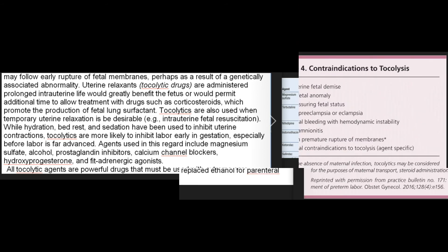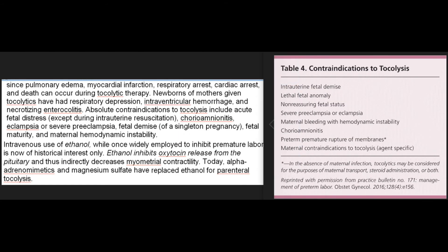Tocolytics are also used when temporary uterine relaxation is desirable, such as in intrauterine fetal resuscitation. While hydration, bed rest, and sedation have been used to inhibit uterine contractions, tocolytics are more likely to inhibit labor early in gestation, especially before labor is far advanced. Agents used in this regard include magnesium sulfate, alcohol, prostaglandin inhibitors, calcium channel blockers, hydroxyprogesterone, and beta-adrenergic agonists. All tocolytic agents are powerful drugs that must be used with extreme care, since pulmonary edema, myocardial infarction, respiratory arrest, cardiac arrest, and death can occur during tocolytic therapy.